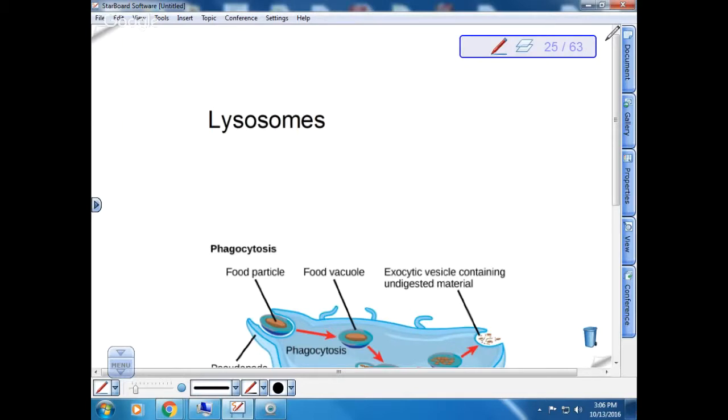So two more organelles. Lysosomes. Where have you seen that word before? Lysol. Hydrolysis. Lysis means to break apart. So lysosomes are organelles with enzymes. And there's like 40 different enzymes that are found inside of the lysosome. This is what is responsible for intracellular digestion.